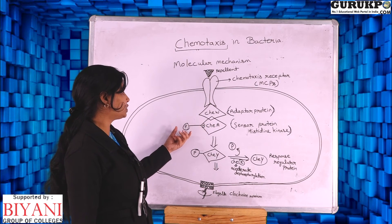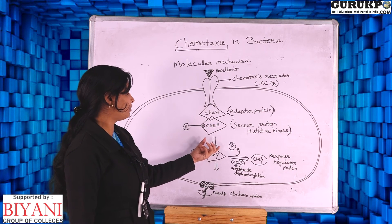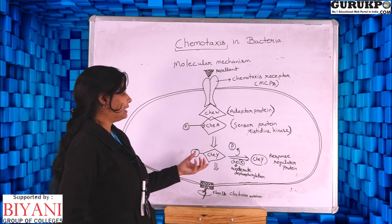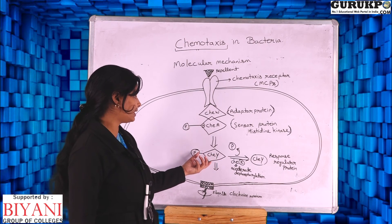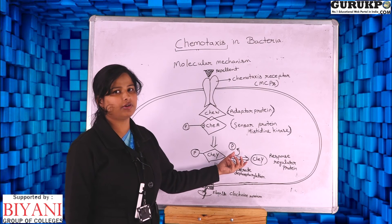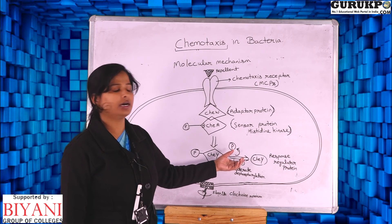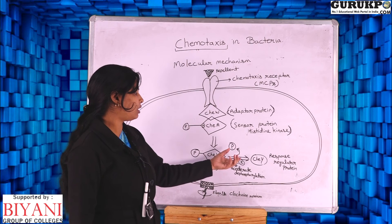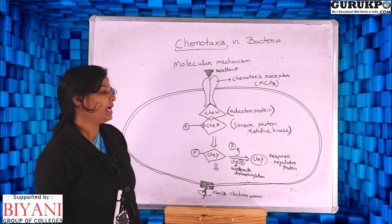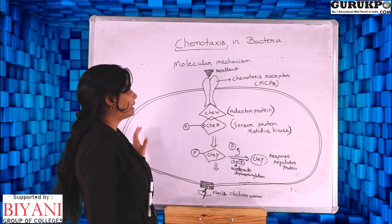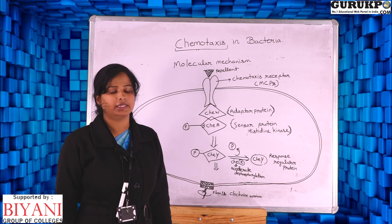Histidine phosphorylation of CheA causes the phosphorylation of CheY, the response regulator protein. The phosphorylated CheY remains active for only a few seconds, and CheZ catalyzes the dephosphorylation of CheY, causing the cells to return to forward motion.